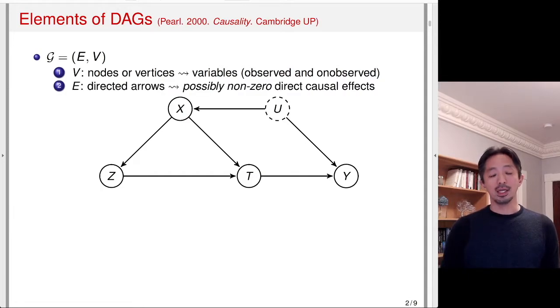E is edges, and in the causal DAGs, edges have arrows, so there's directed arrows. For example, there's an arrow going from X to Z. What this represents is a possibly non-zero direct causal effect. So it encodes that X may have an effect on Z. It doesn't have to have, but it's a possibility of having a direct causal effect.